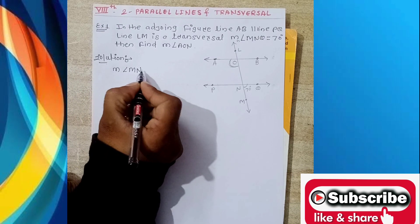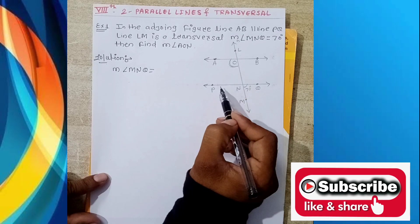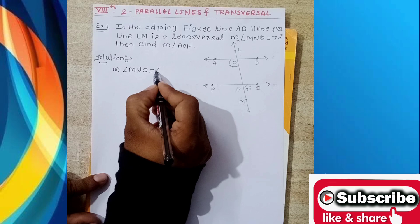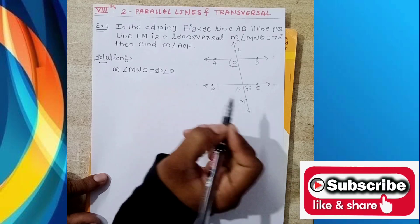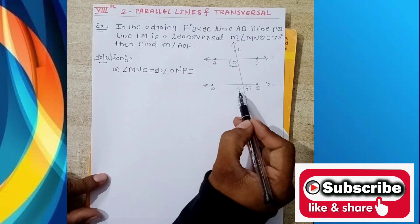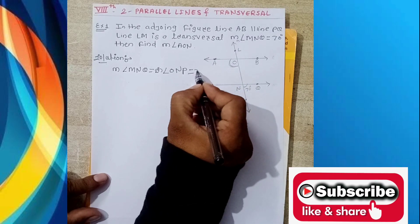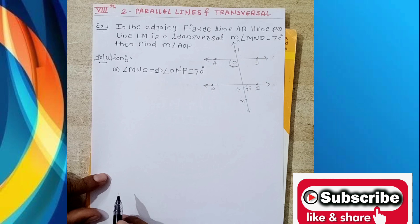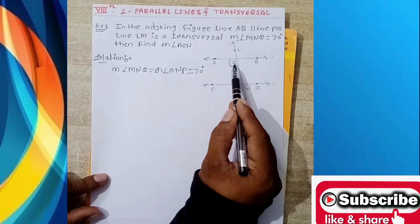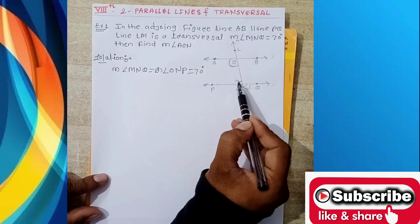In the solution, measure of angle YMQ equals measure of angle ONP, because they are vertically opposite angles. So measure of angle ONP equals 70 degrees, since both are opposite angles.